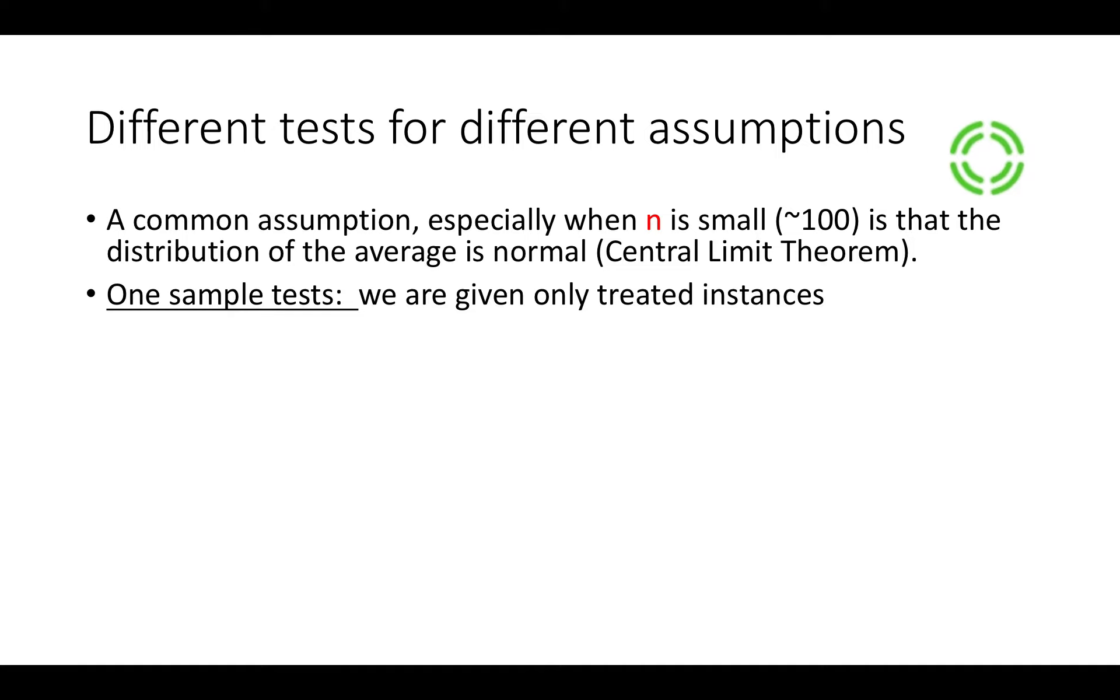So there are two categories of tests, of t-tests. One sample test when we're given only the treated instances and we don't have anything about, no data about the untreated, but instead we assume that we already know something about the untreated.